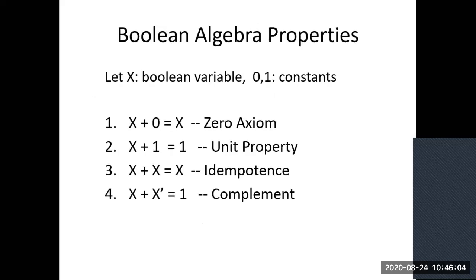We will take a few examples for Boolean algebra properties, and later we will discuss some standard theorems and prove them. For OR operations: if you take X OR zero, you will get X. If X is zero, you get zero; if X is one, you get one. So X plus zero equals X. This is one property.